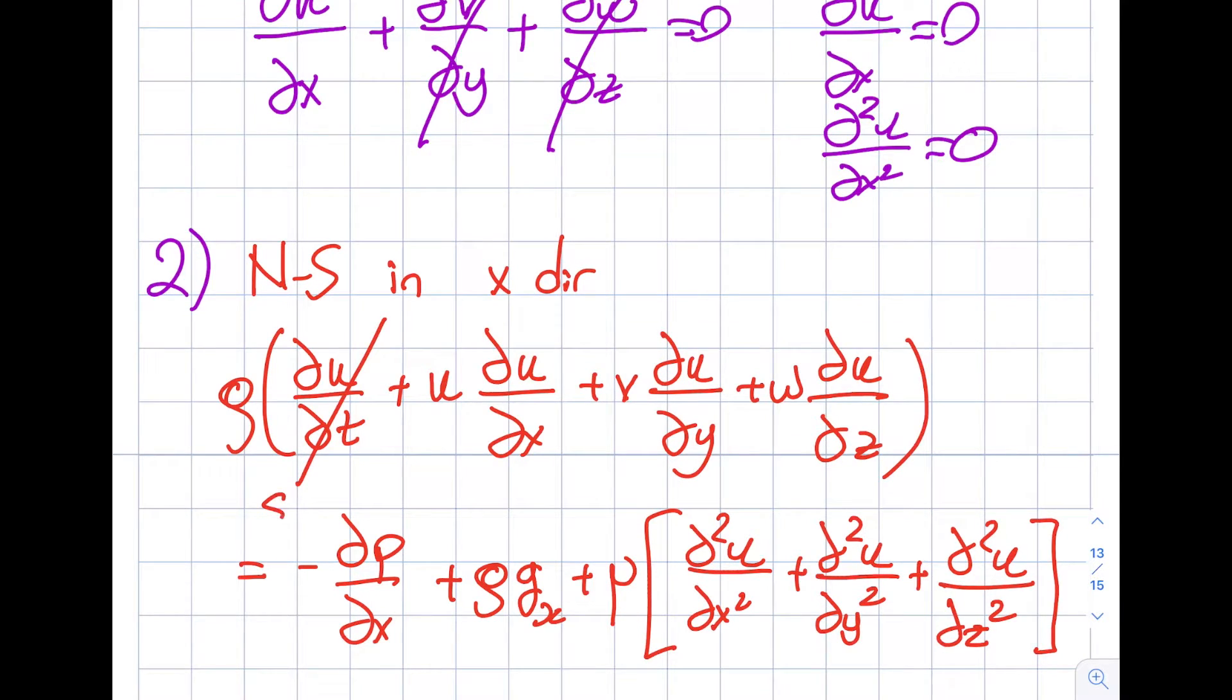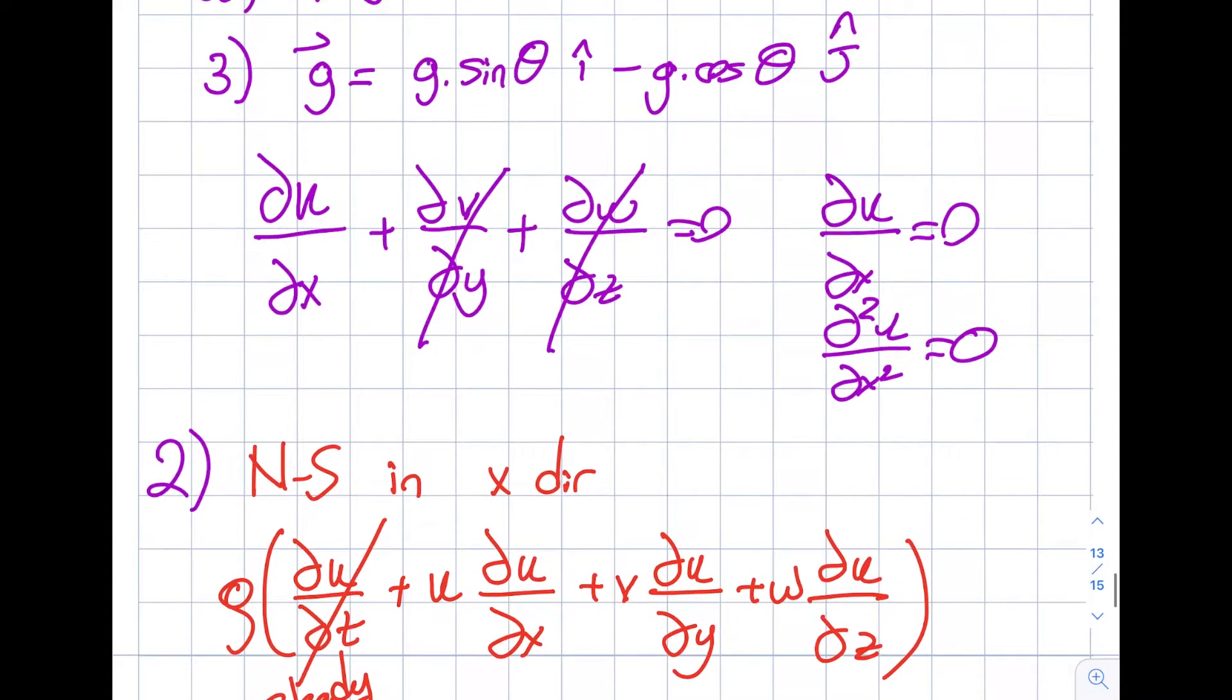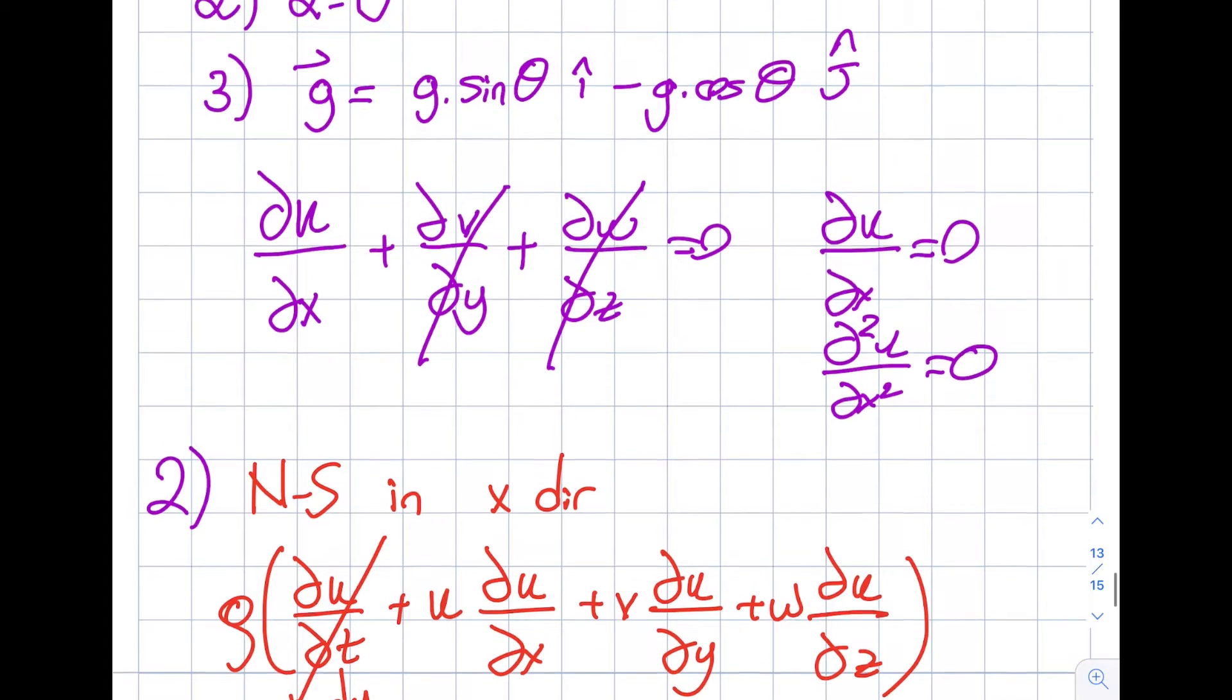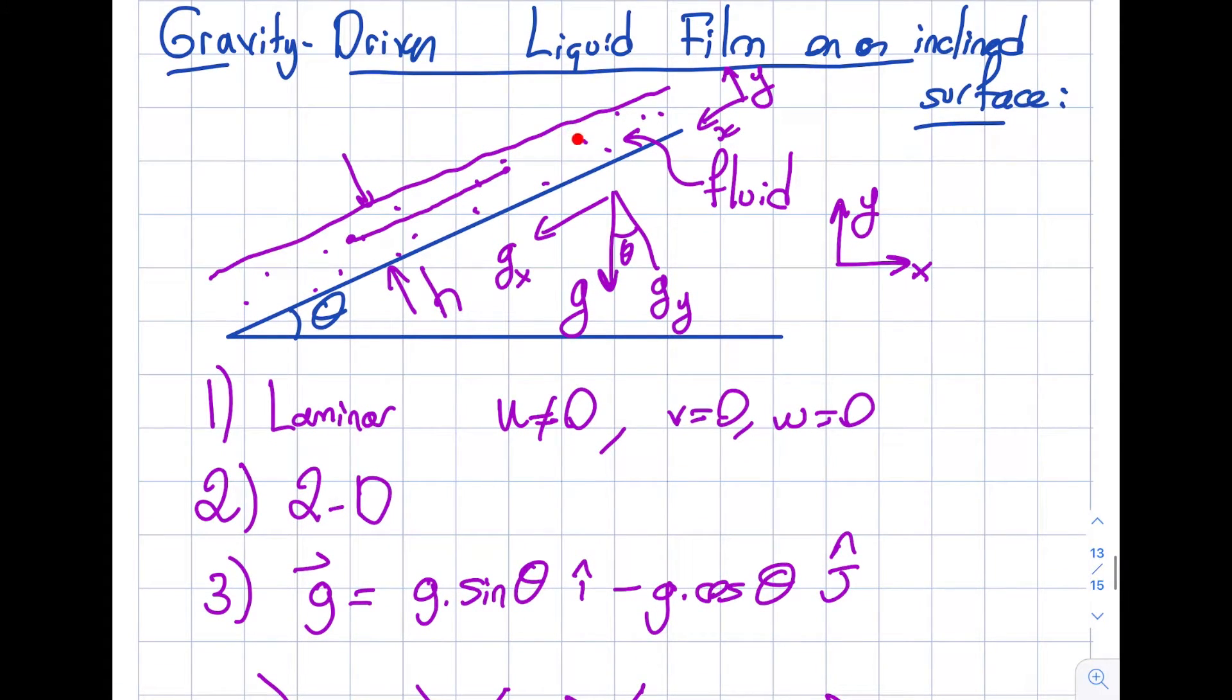So this will vanish because this is steady. And one thing I want to tell you as a shortcut as well: see, what does del u del x equals 0 mean physically? It means that the velocity here is u, the velocity over here is u as well. It is not a function of x. It's here, it's u, u, u, u, u.